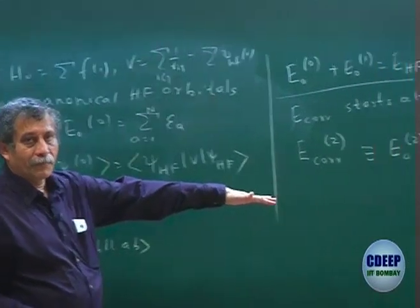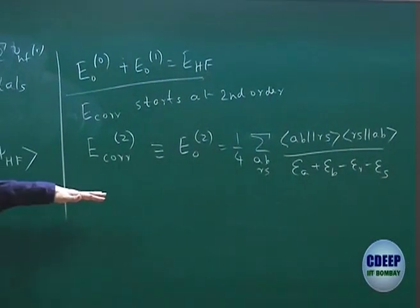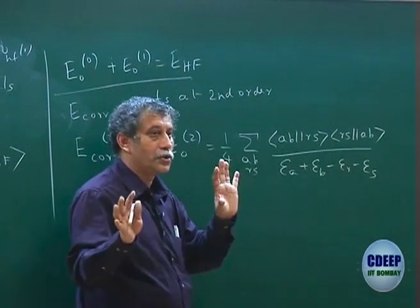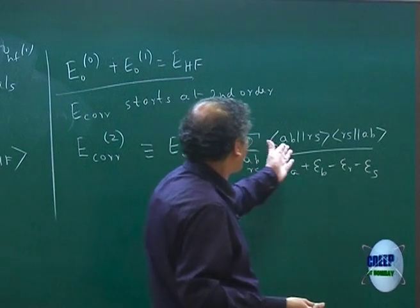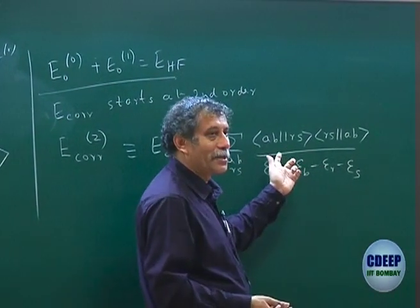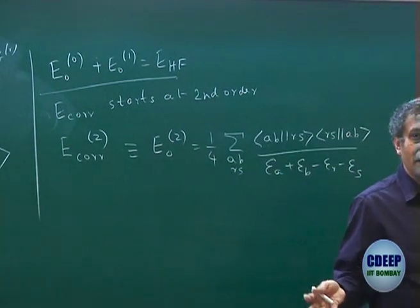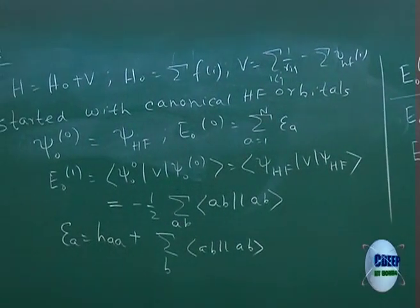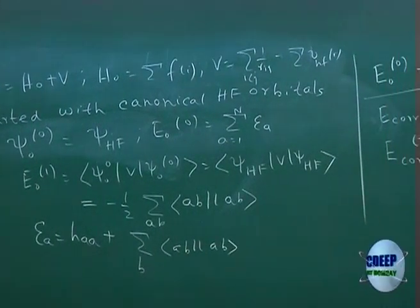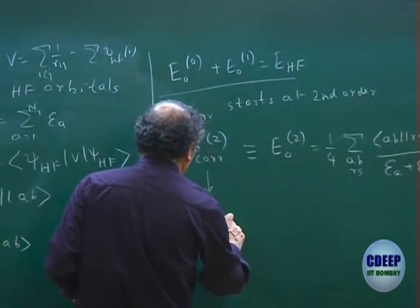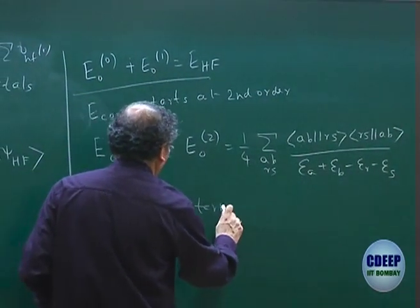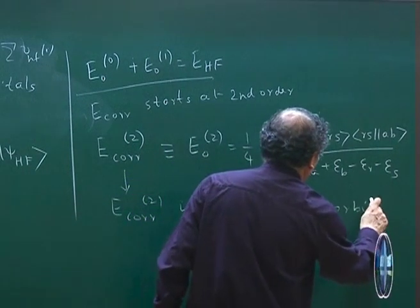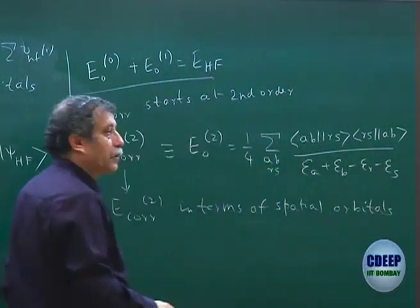The homework essentially starts from here. Please submit it on Monday: you have to write these antisymmetrized integrals in regular integrals, write an expression, use symmetry to simplify — don't just expand in one line. Try to simplify in terms of regular integrals, still in terms of spin orbitals, then do a spin integration. Eventually land up with the correlation energy in terms of spatial orbitals, for both occupied and virtual orbitals.